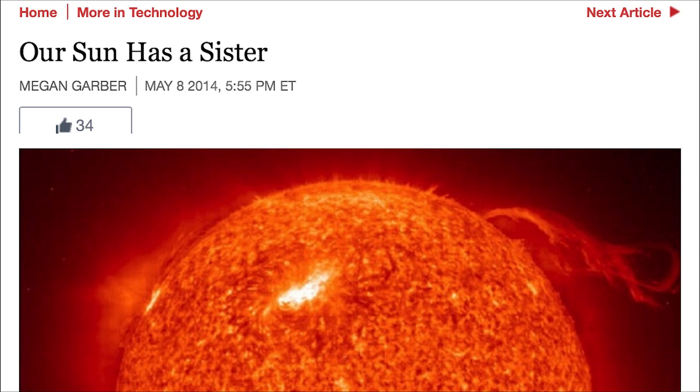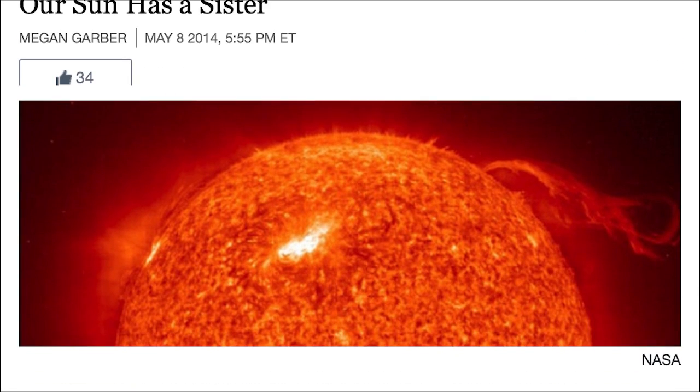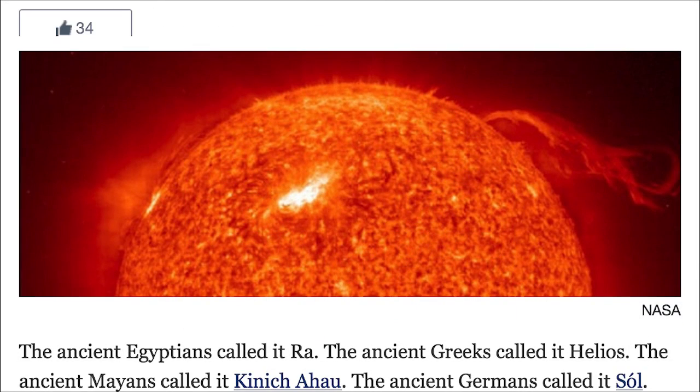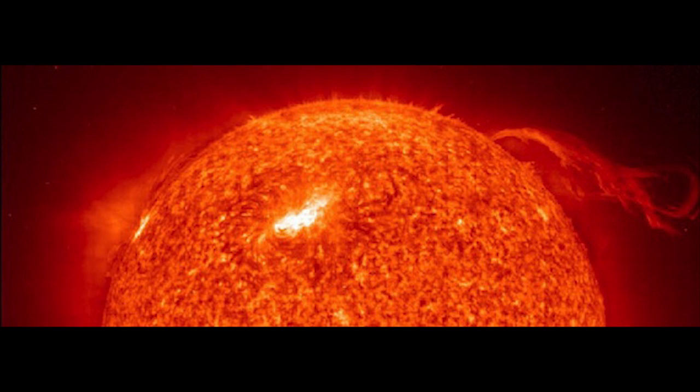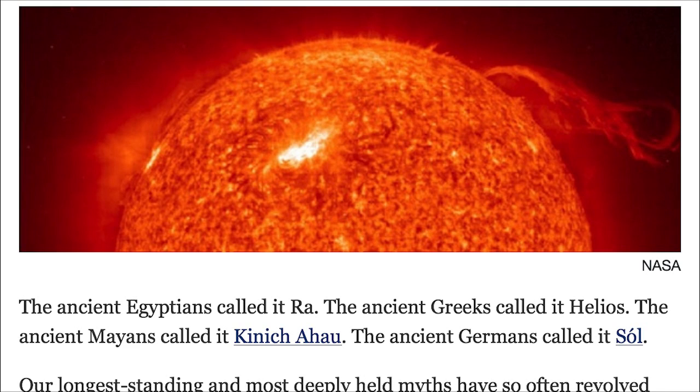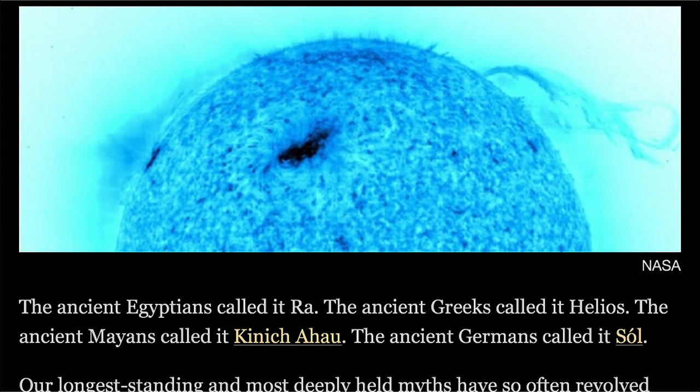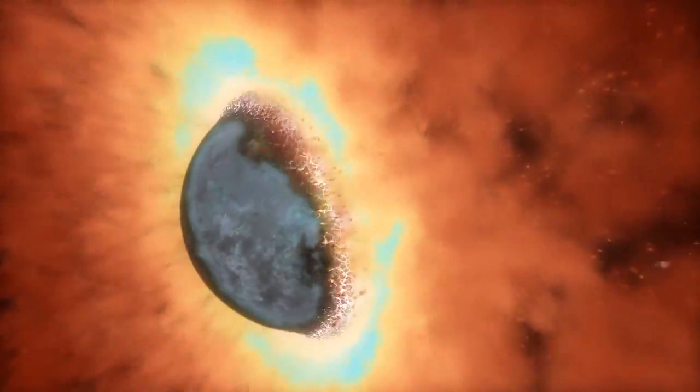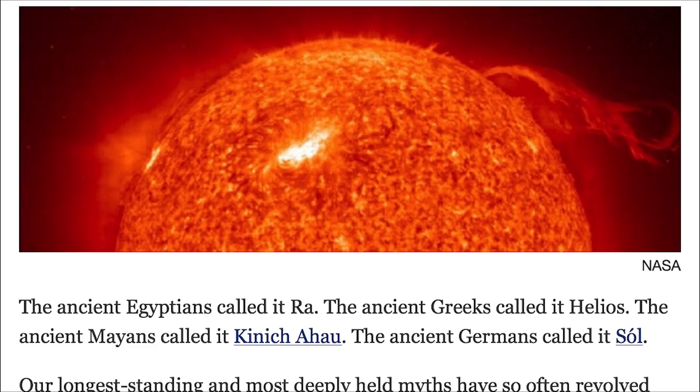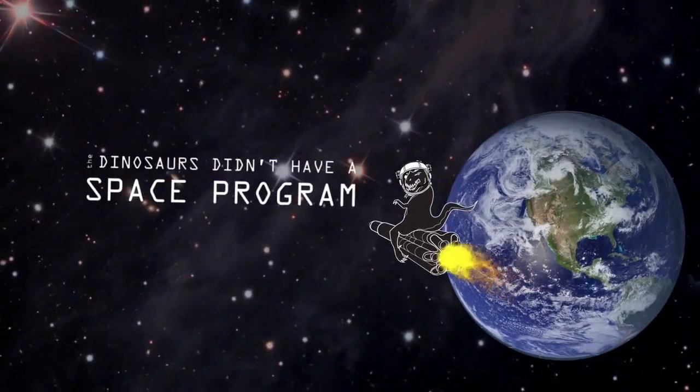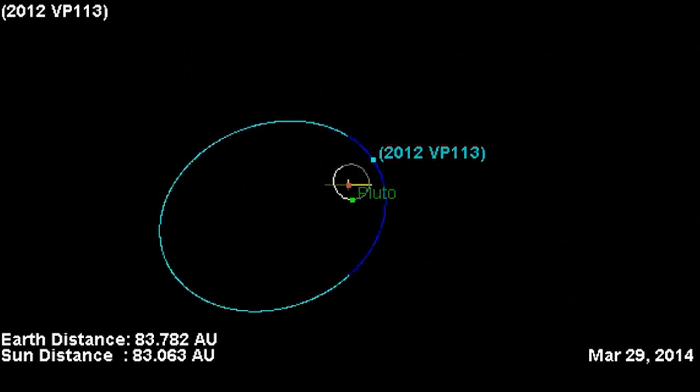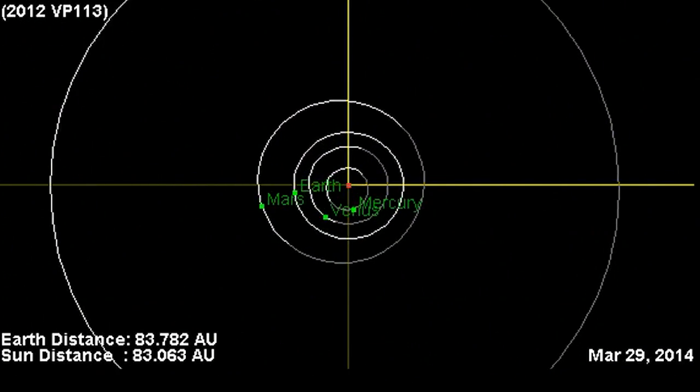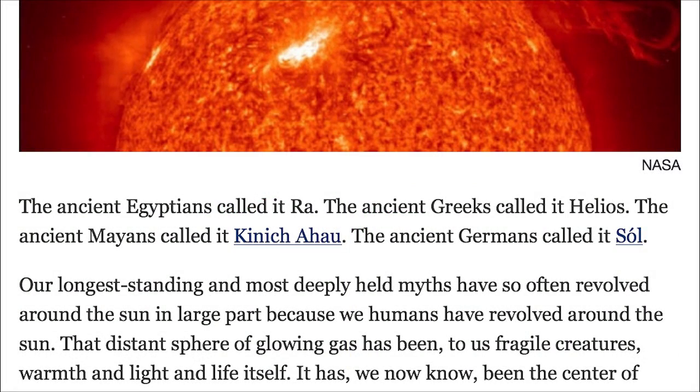All right, we'll start over at The Atlantic with 'Our Son Has a Sister, Apparently.' It kind of looks like son's dude, man. Well, I guess that's our sun. The ancient Egyptians called it Ra, the ancient Greeks called it Helios, the ancient Mayans called it—konichiwa? Wait, that's Chinese for I love you. The ancient Germans called it Sol. Yeah, well I guess they all got it wrong because they're all ancient now and we are modern. Our longest standing and most deeply held myths have so often revolved around the sun, in large part because we humans have revolved around the sun.